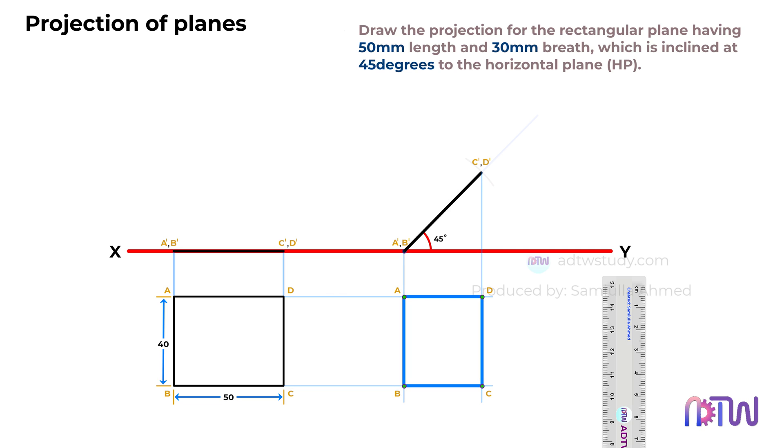This is how the projection of a rectangle, measuring 50mm in length and 40mm in width and inclined at a 45 degree angle, appears from the top view. This is how the plane resting in the first quadrant is represented in the orthographic view. I hope this explanation clarifies how to project different planes in the first quadrant.